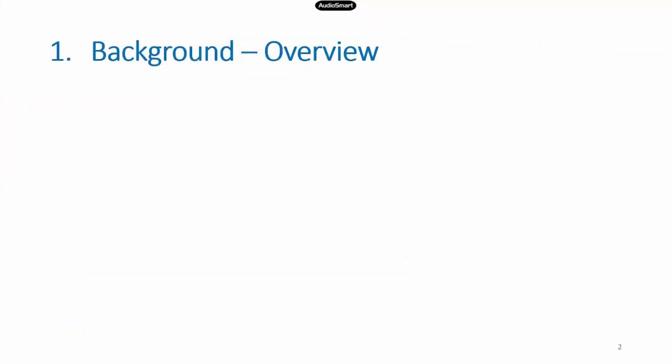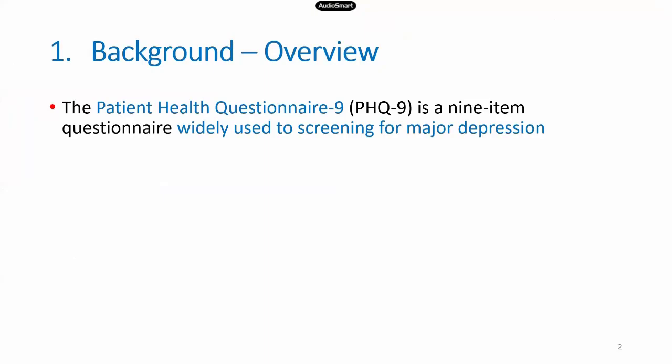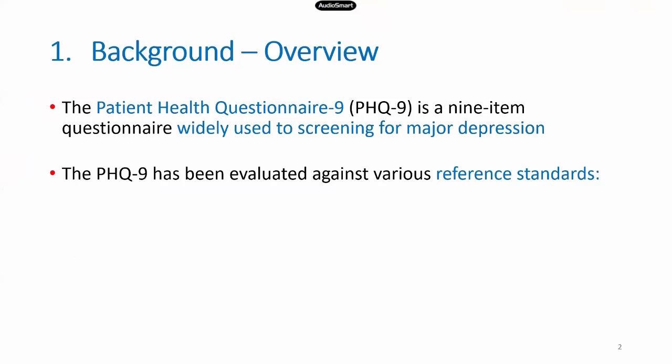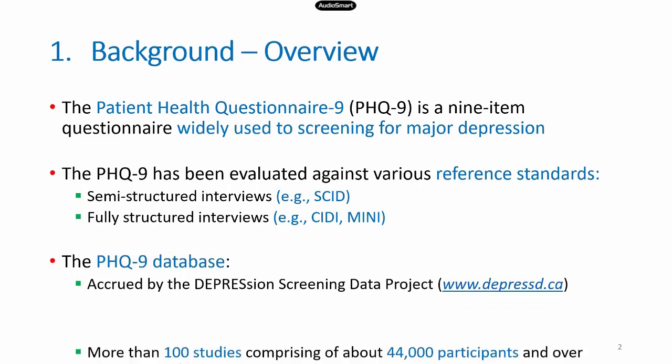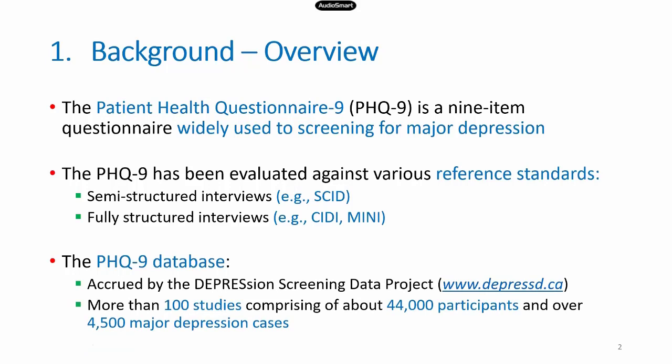This problem was motivated by the Patient Health Questionnaire-9 database that we have here in our research group. The PHQ-9 is a widely used nine-item questionnaire used to screen for major depression, and it has been evaluated against multiple reference standards, including semi-structured interviews such as SCID and fully structured interviews such as CIDI and Mini. In our database, we were able to accrue more than 100 studies consisting of over 44,000 participants, of which 4,500 had major depression cases.